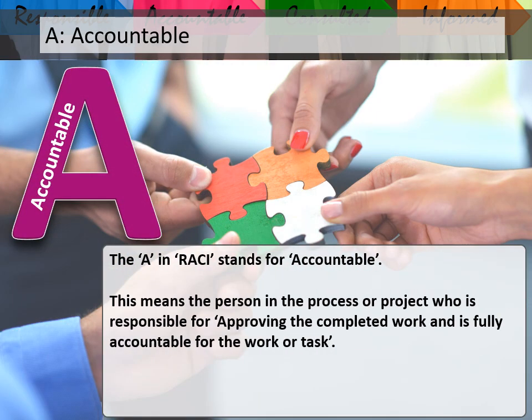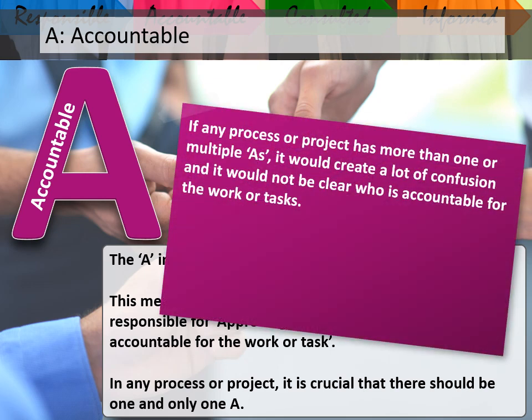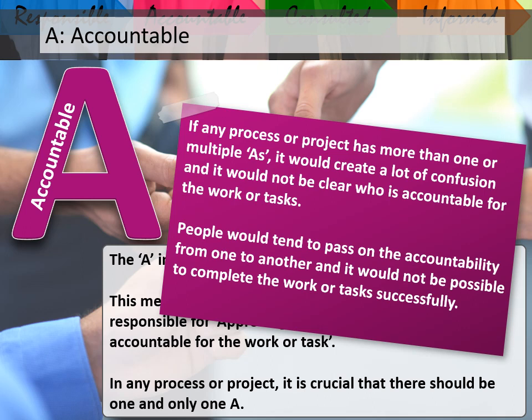A - Accountable. This means the person in the process or project who is responsible for approving the completed work and is fully accountable for the work or task. In any process or project, it is crucial that there should be one and only one A. If a process or project has more than one A, it would create a lot of confusion, and it would not be clear who is accountable. People would tend to pass on the accountability from one to another, and it would not be possible to complete the work or tasks successfully.